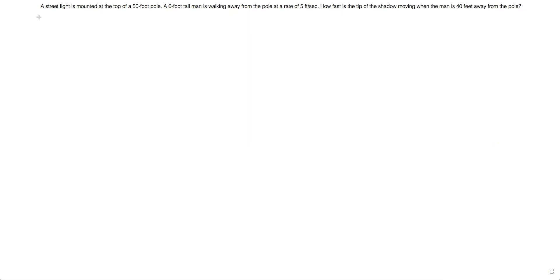So let's read through the problem. We know it's definitely a related rate problem given the information and given the question that they're asking us. A streetlight is mounted at the top of a 50 foot pole. A six foot tall man is walking away from the pole at a rate of five feet every second. How fast is the tip of the man's shadow moving when the man is 40 feet away from the pole?